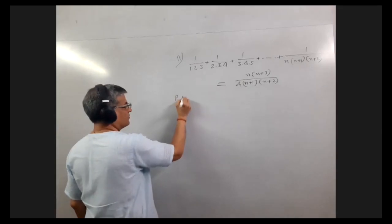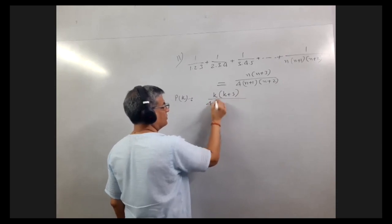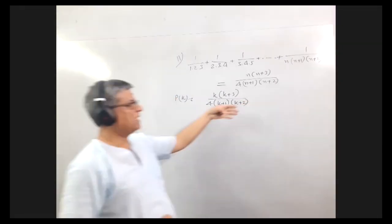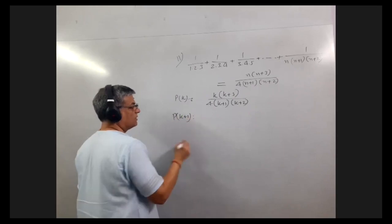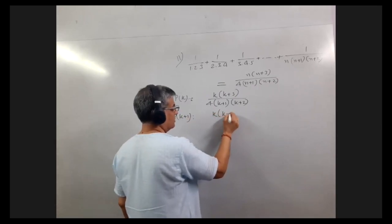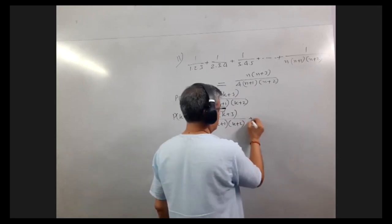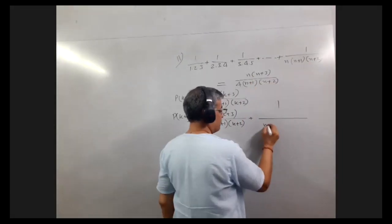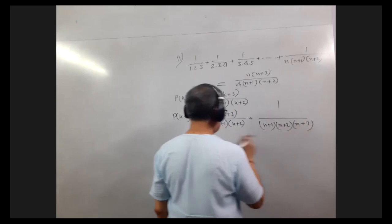So P(k) we have as k plus 3 upon 4 times k plus 1 times k plus 2. And for P(k+1) we will add one more term like this to this result. So P(k+1) will be written as k into k plus 3 upon 4 into k plus 1 times k plus 2 plus 1 upon k plus 1 plus 1 and plus 2 and plus 3.